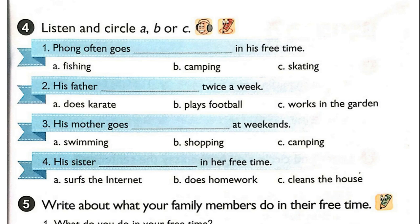Page 21. Activity 4. Listen and circle A, B or C. Hi. My name is Huang. In my free time, I often go skating with my friends because I like sports very much. My father likes sports too. He does karate twice a week.